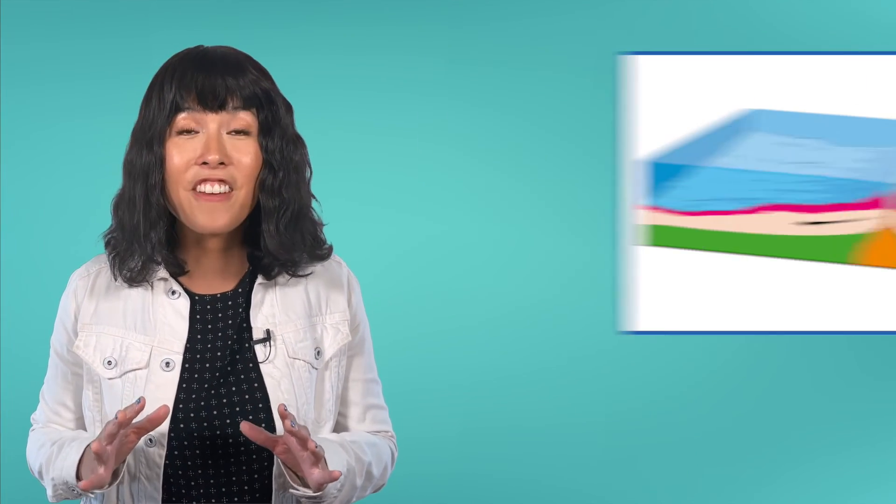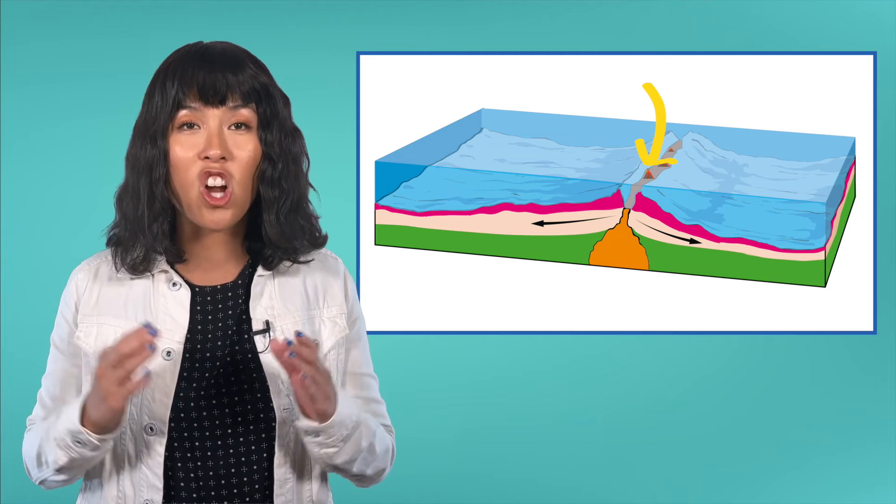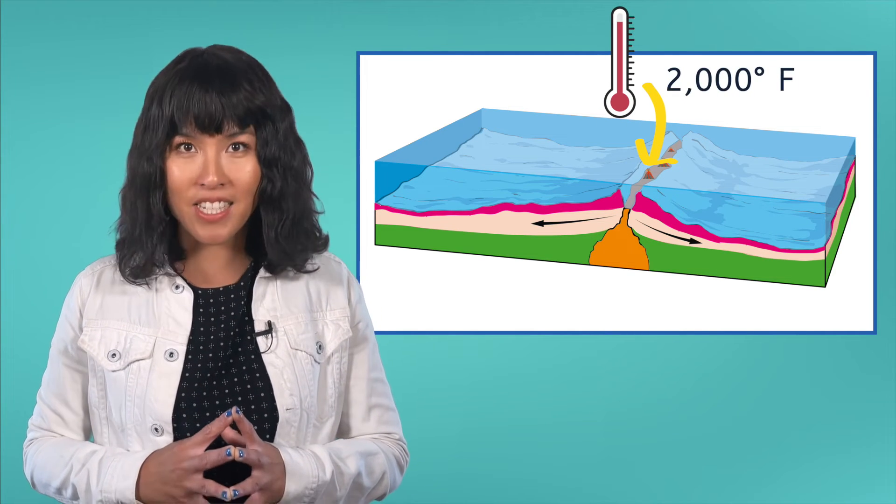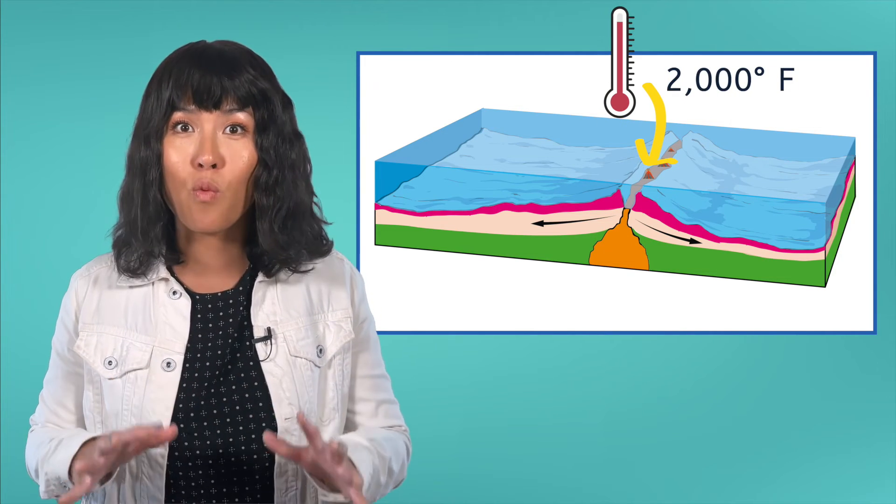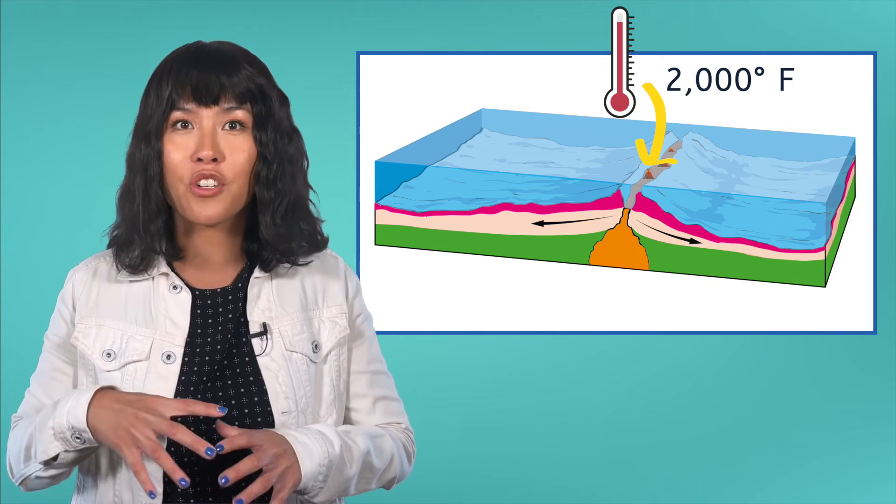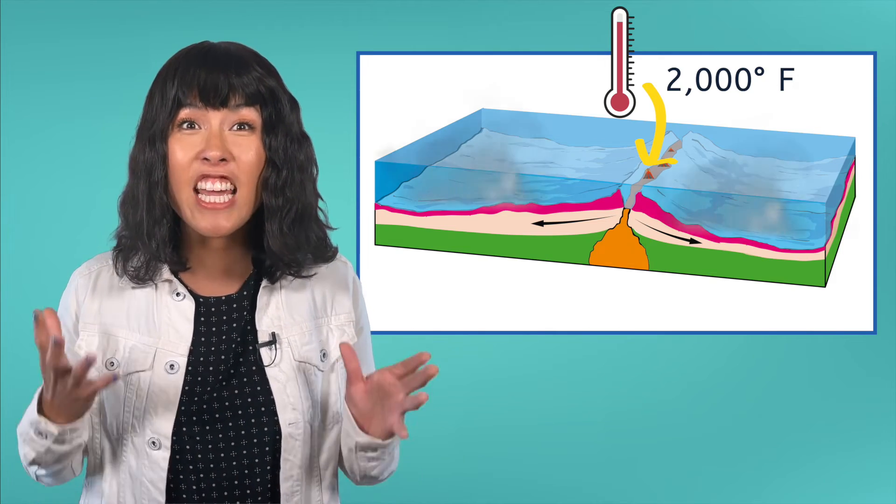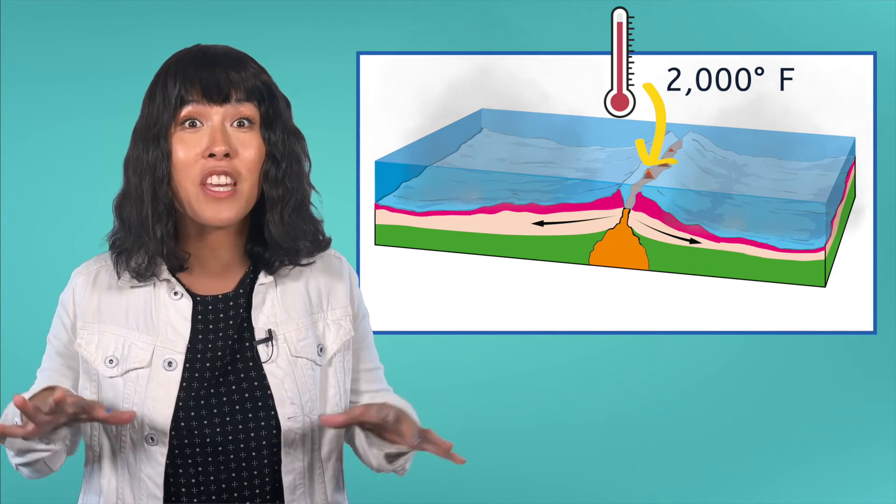Remember, even the upper parts of the mantle are nearly 2,000 degrees Fahrenheit in temperature. The magma that wells up from the planet's interior during seafloor spreading is hot enough to raise the temperature of the ocean nearby.